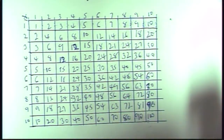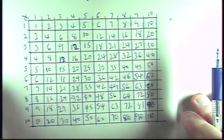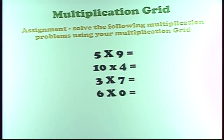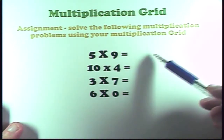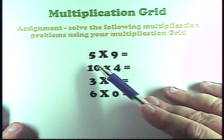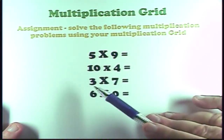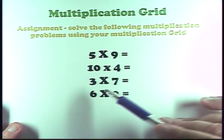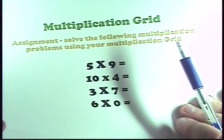I want to give you an assignment of doing one of these grids that's twenty by twenty. And once you have this multiplication grid, I want you to perform this assignment. I want you to find out the answer to five times nine, and ten times four, and three times seven, and six times zero.